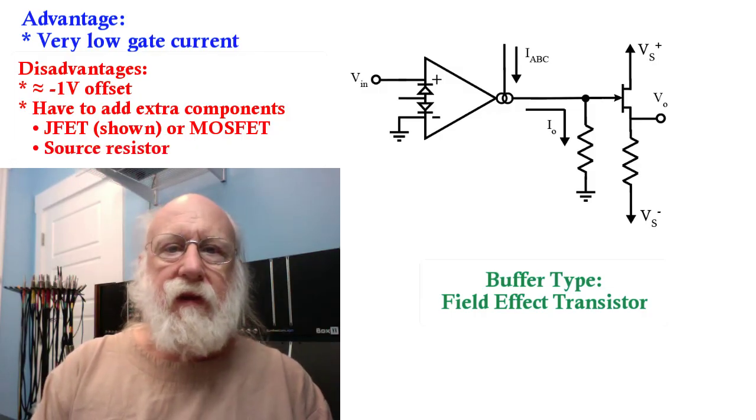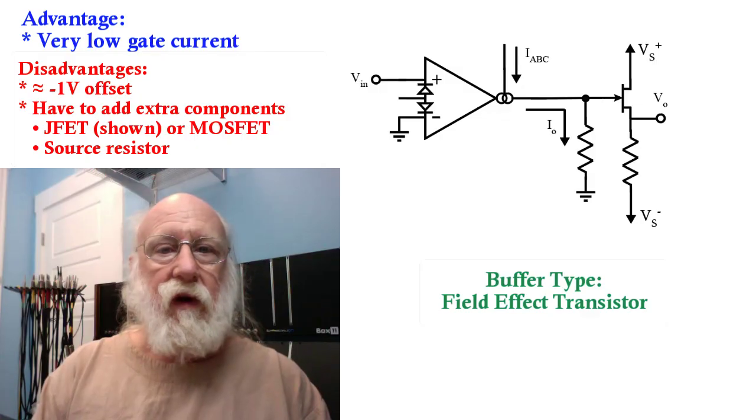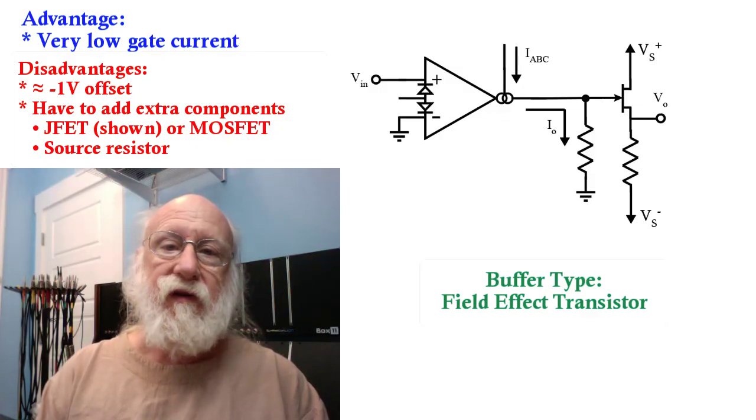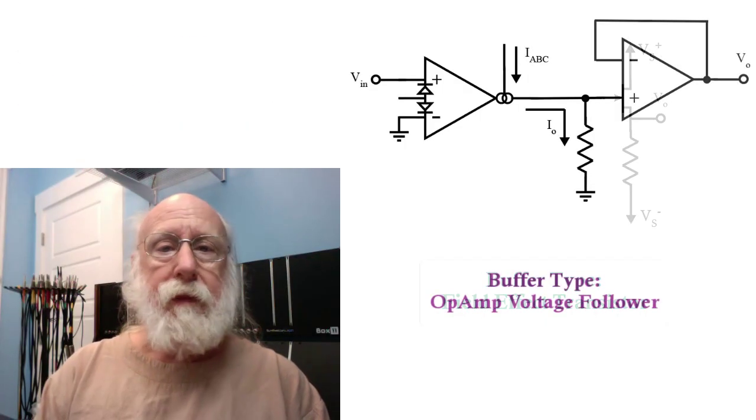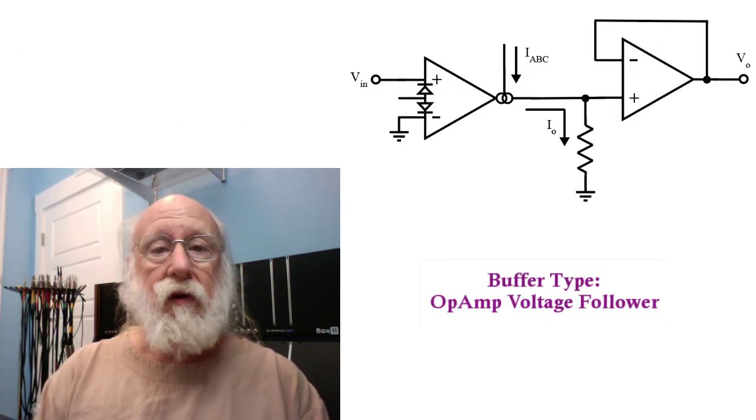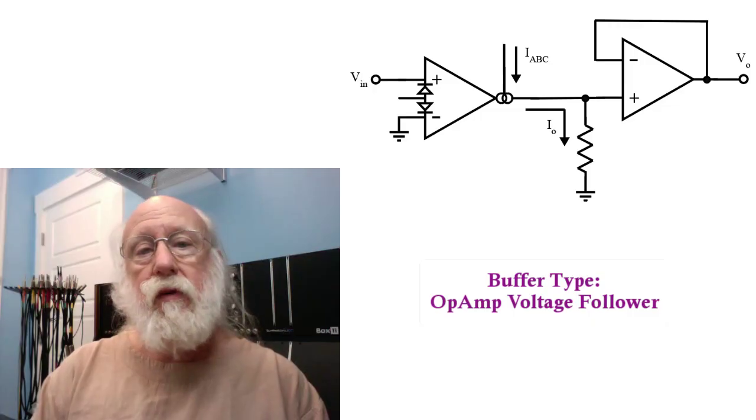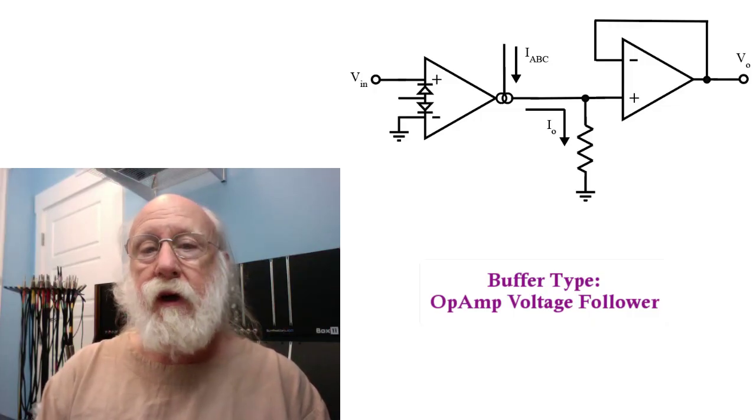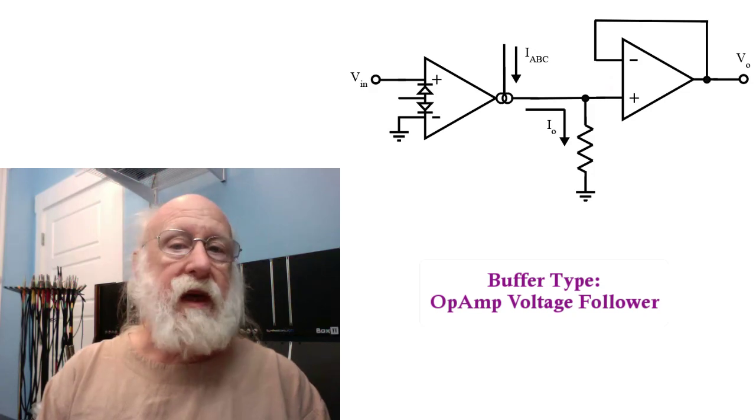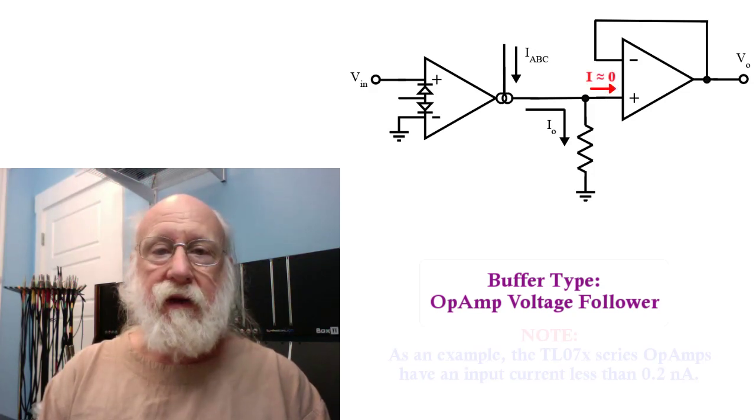The final scheme that we will look at that involves using a resistor to ground to do the current to voltage conversion and then following that with a buffer uses an op amp connected as a voltage follower. Here, you would probably want to use some sort of FET input op amp in order to minimize the amount of current into that input.